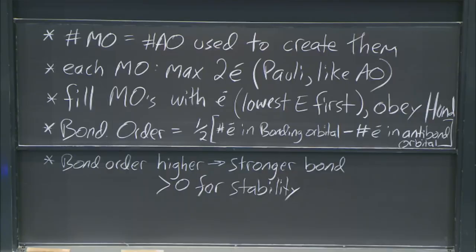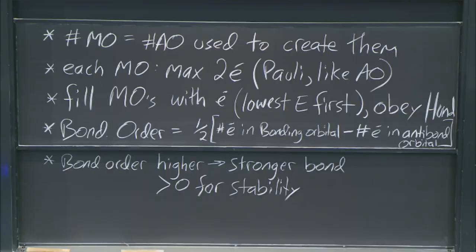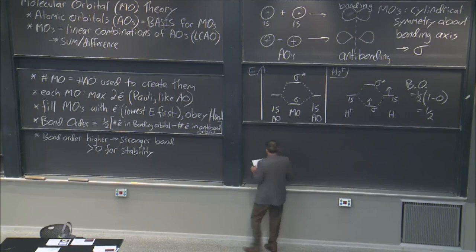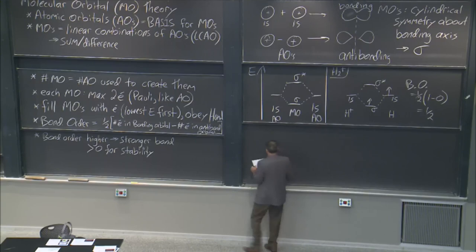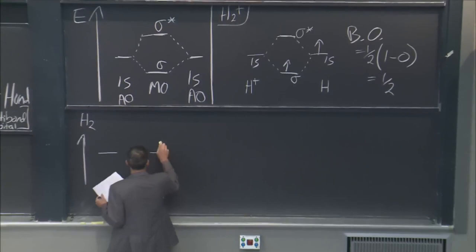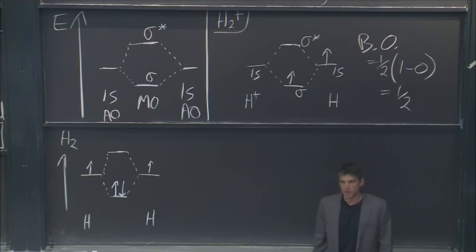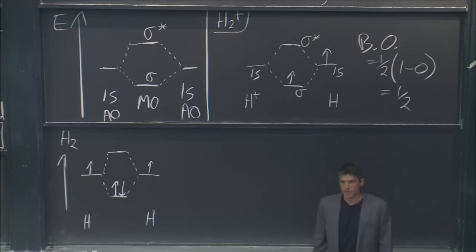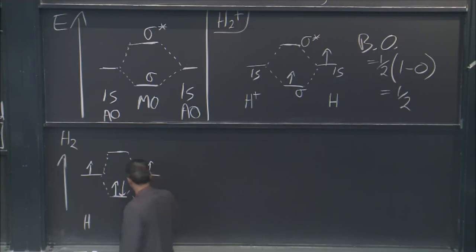Now we go to H2. Energy is always going up in these diagrams. Each hydrogen atom brings one electron — there's no charge to the system. Different quantum numbers, Pauli, but same sigma orbital. That's H2. The bond order here is equal to 1: two electrons in the bonding orbital, none in the antibonding orbital.